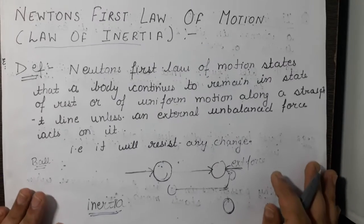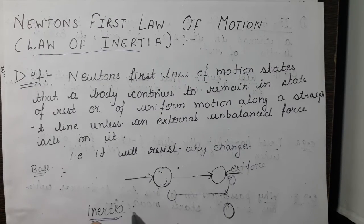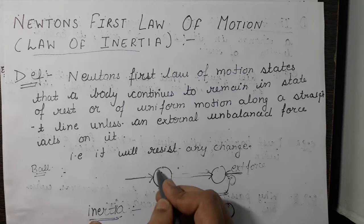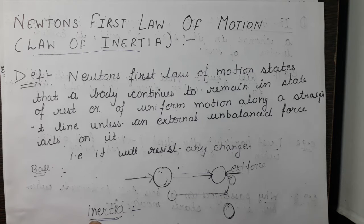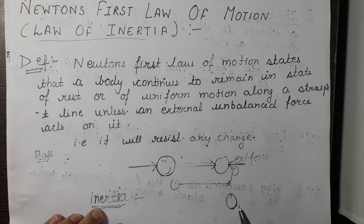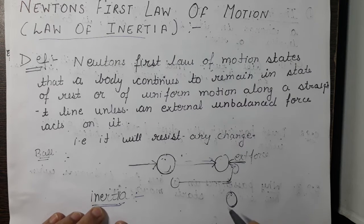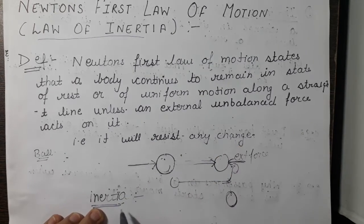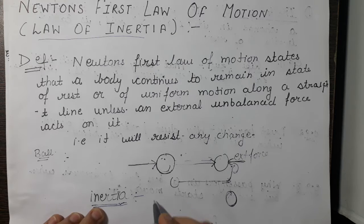If we define inertia: inertia is that property by virtue of which a body resists any change. If it is in the state of motion it will try to remain in the state of motion, if it is in the state of rest it will try to remain at rest, and if it is going in any particular direction it will try to go in the same direction unless an unbalanced force is applied on it.